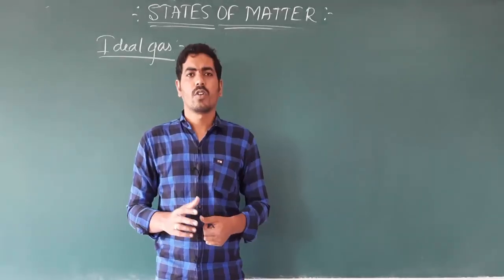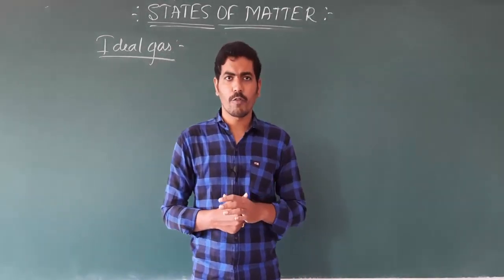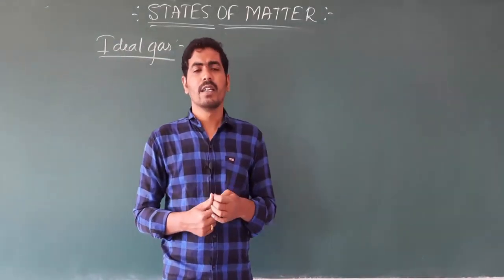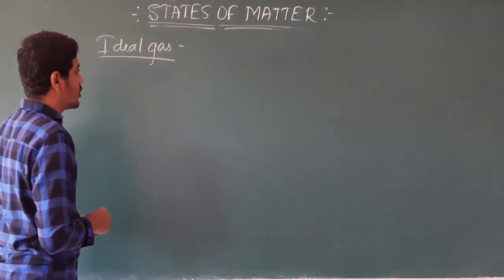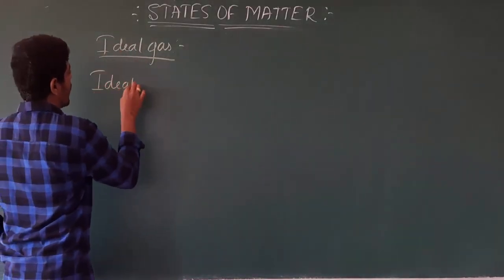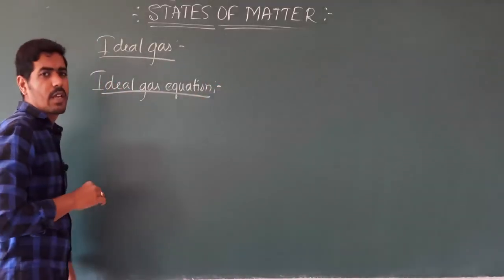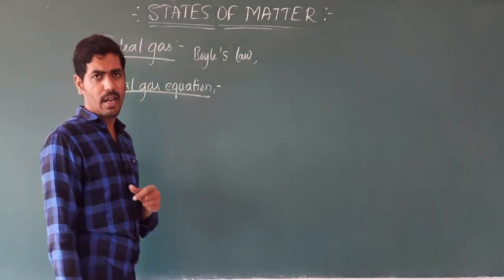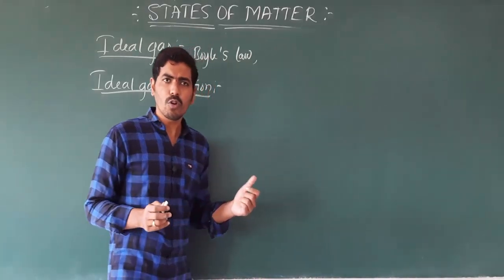Now we will derive an equation which relates pressure, volume, temperature, and number of moles all together. That equation which gives the relationship between pressure, volume, temperature, and number of moles is called the ideal gas equation. By combining the expressions of Boyle's law, Charles's law, and Avogadro's law, we will derive the ideal gas equation.